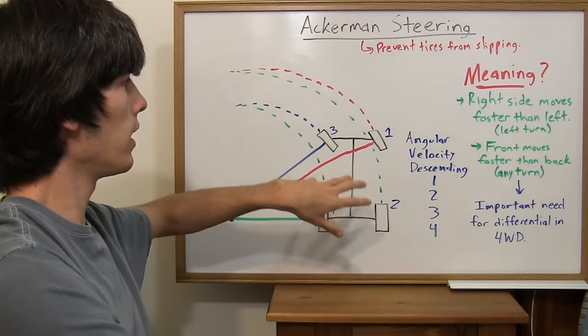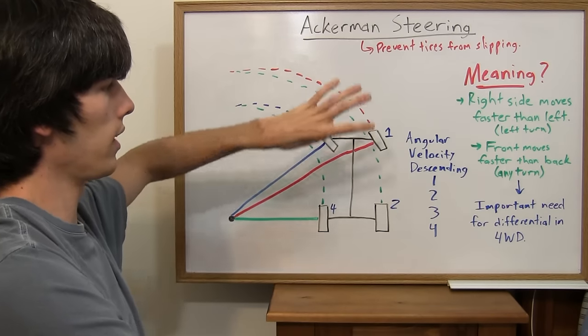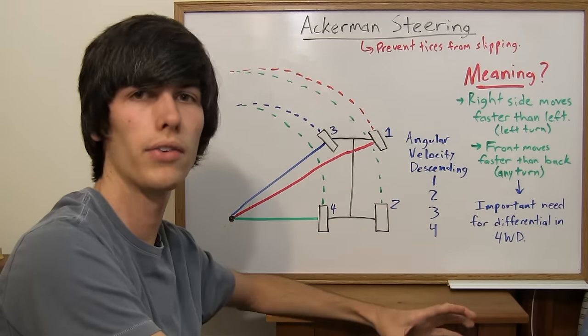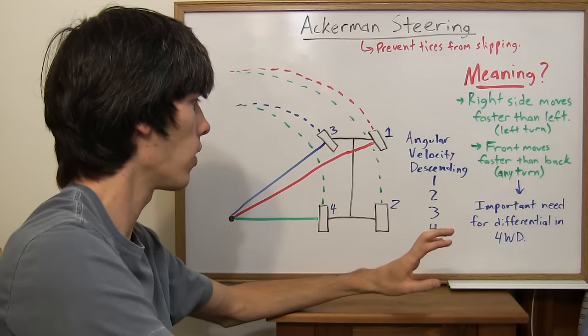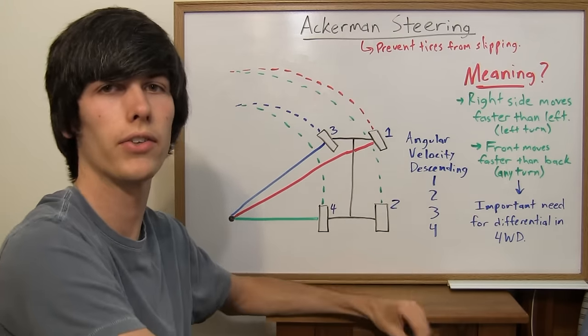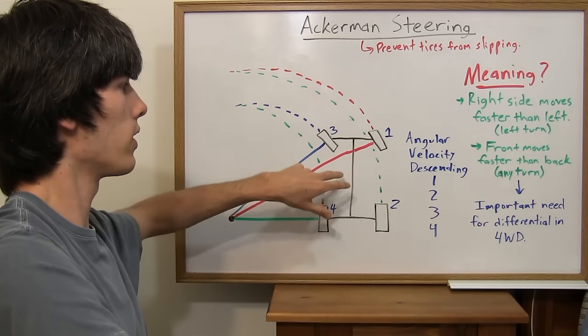Otherwise, you're going to have some buckling, it's not going to work out. You're going to wear the tires, and you're going to be slipping. You'll have understeer. So you want a differential.